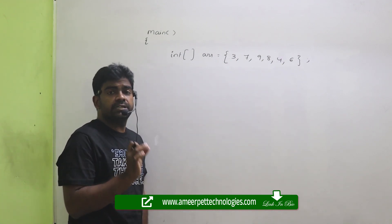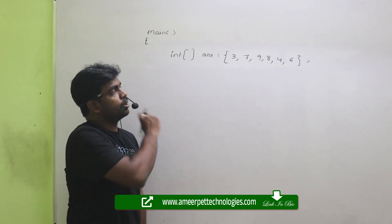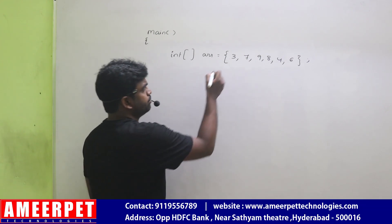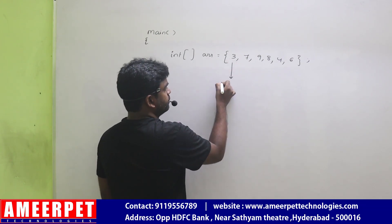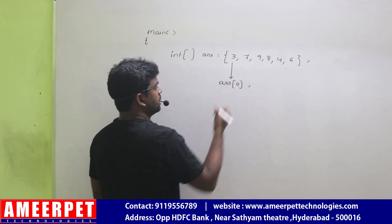We're checking if the first number is even or not, only one number. The first element is always in the zeroth location, so ARR of 0.